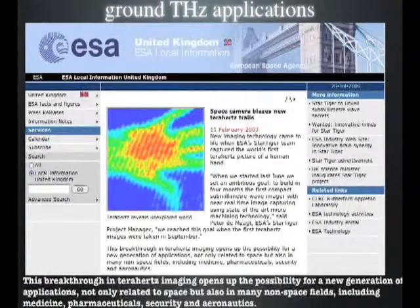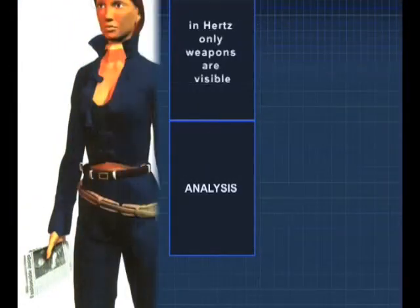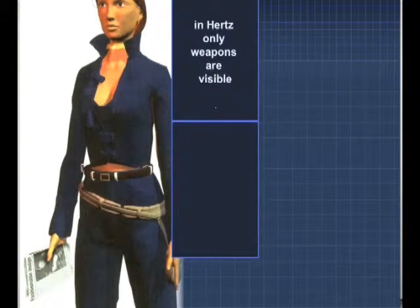One example of this is in imaging for security applications. It turns out that terahertz radiation passes through materials like plastics and fabrics really rather easily, but of course it doesn't pass through other denser materials like metals.